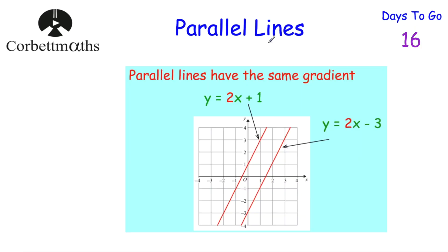Today we're going to be looking at parallel lines. So we've looked at straight line graphs, graphs in the form y equals mx plus c. And if graphs have got the same gradient, they're going to be parallel to each other. So here's part of the Code Maths revision card. If you've got the graph of y equals 2x plus 1 and y equals 2x minus 3, those two lines will be parallel to each other, because they've got the same steepness, the same gradient. Two lines will be parallel to each other if they've got the same gradient.